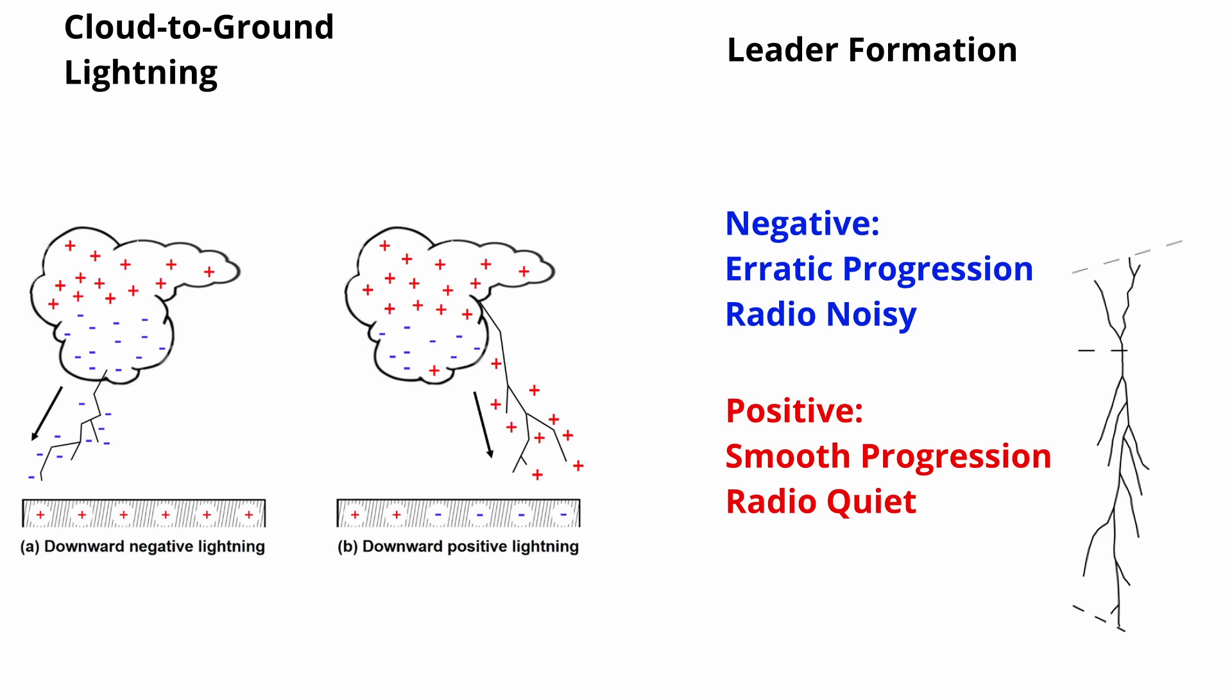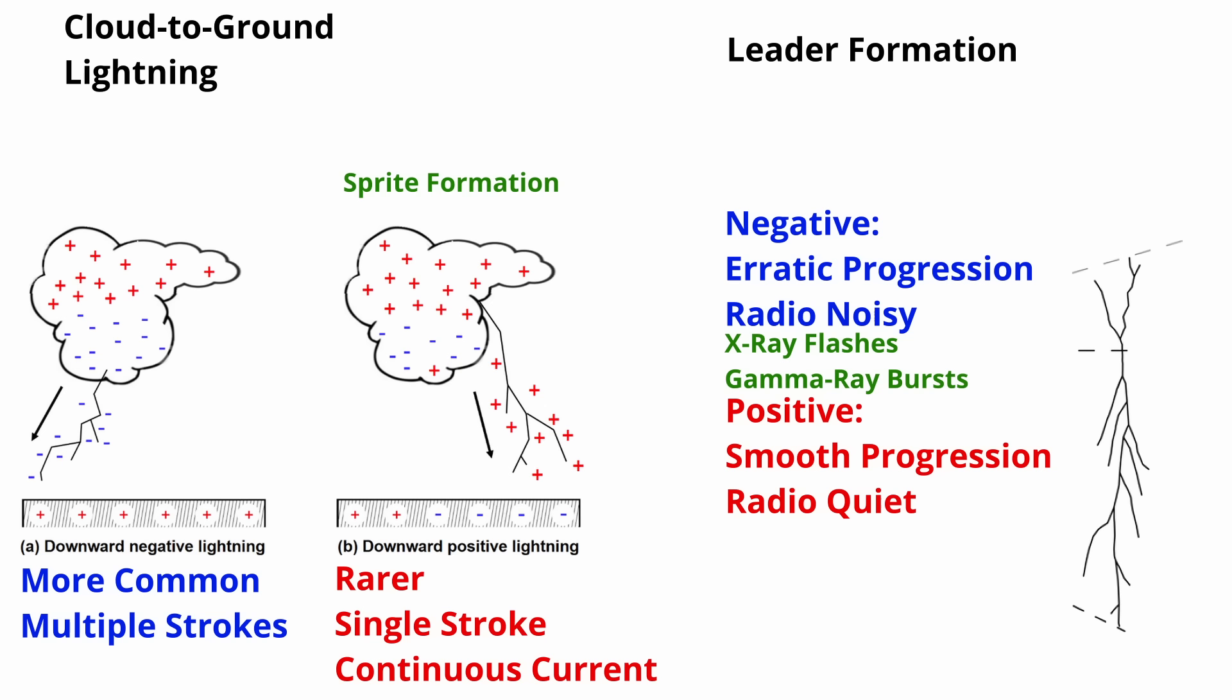Examining cloud-to-ground lightning further emphasizes these disparities, with negative lightning being more common yet composed of multiple strokes, while positive lightning, though rare, manifests as a single stroke with continuous current. The association of the negative end of a lightning tree with X-ray and gamma-ray production adds another layer to the complexity.